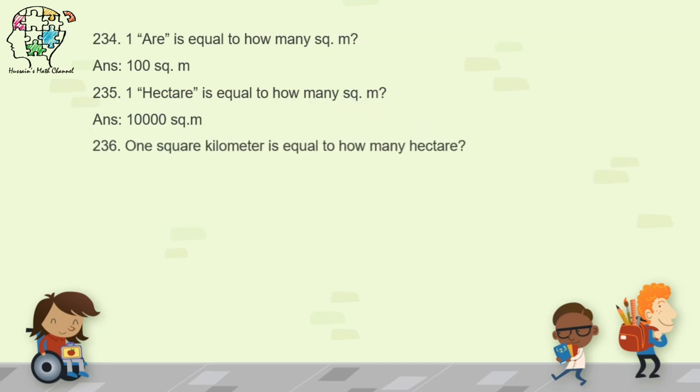Question 236: one square kilometer is equal to how many hectares? One kilometer equals 1,000 meters, so you multiply 1,000 by 1,000 to get square meters, then divide by 10,000. The result is 100 hectares. One square kilometer equals 100 hectares.